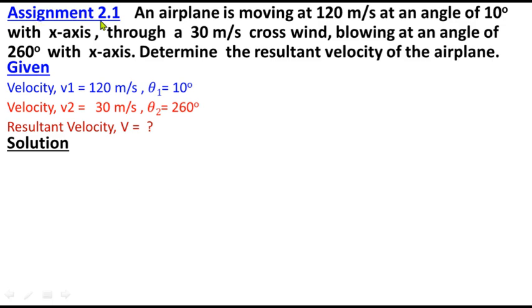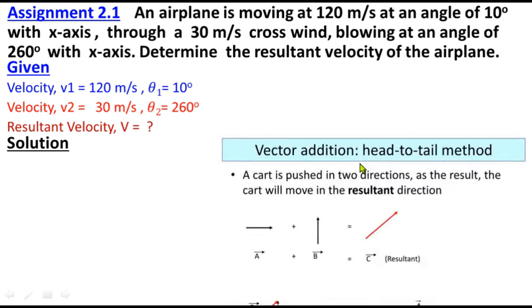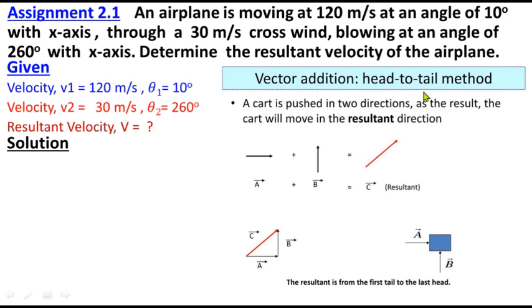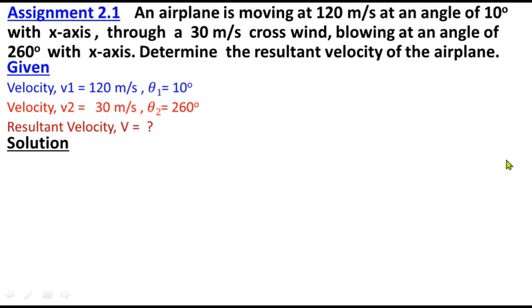This is vector addition using the head-to-tail method. One vector is added to the other vector. The head of one vector connects to the tail of the other, which gives us the resultant vector. Many people have solved it mathematically, but we'll follow this graphical procedure.